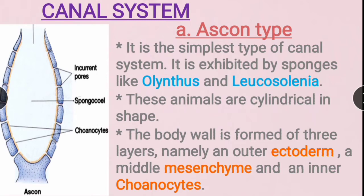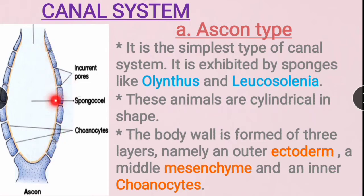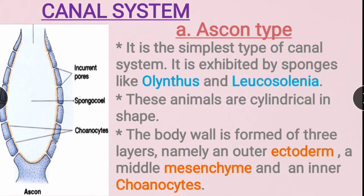The body wall is formed of three layers. The outer layer we call the ectoderm, the middle layer we call the mesenchyma, and the innermost layer we call the choanocytes. Choanocytes have flagellated cells.